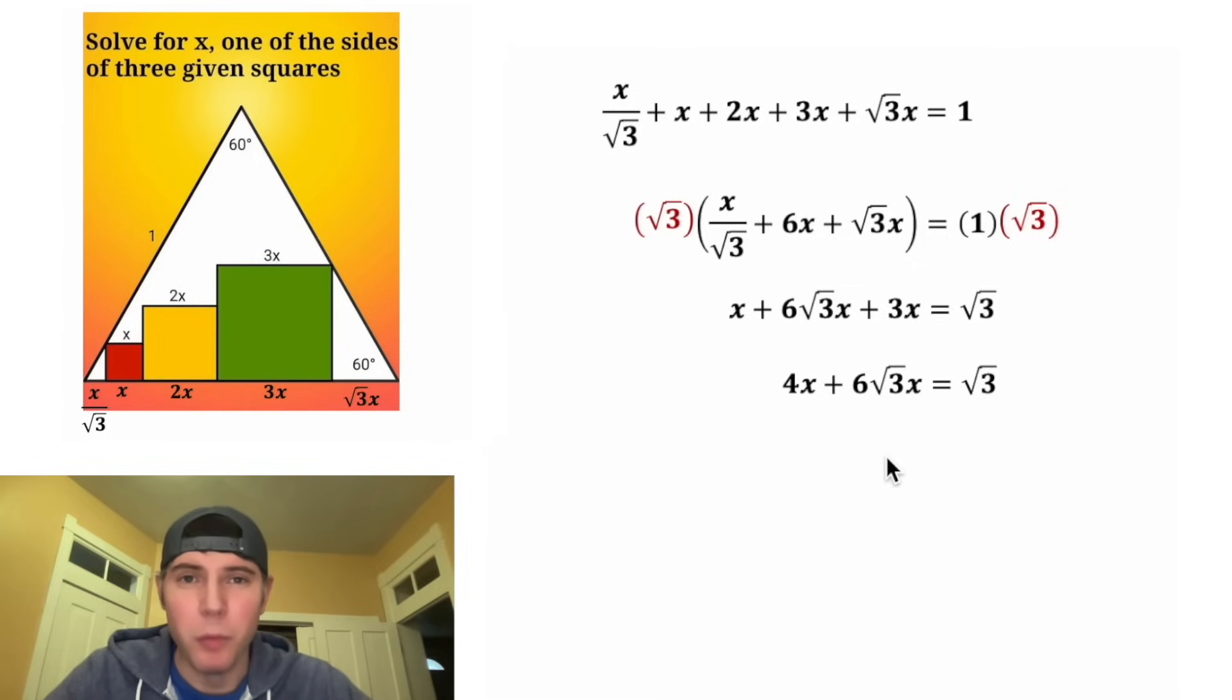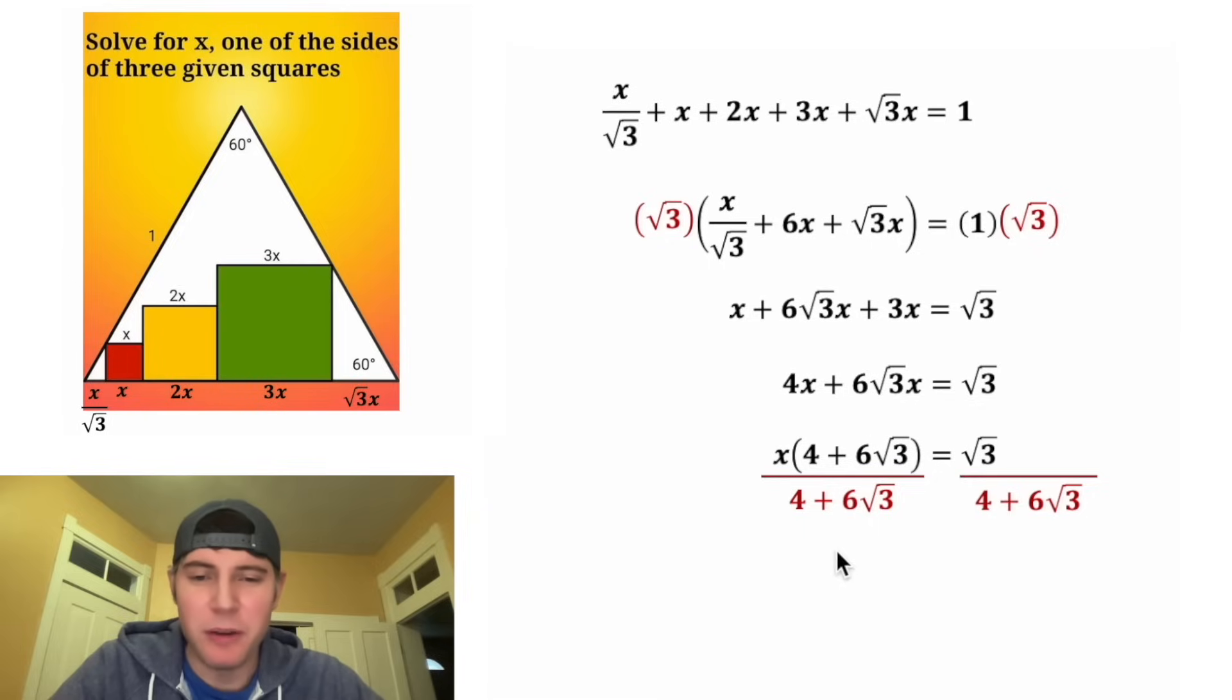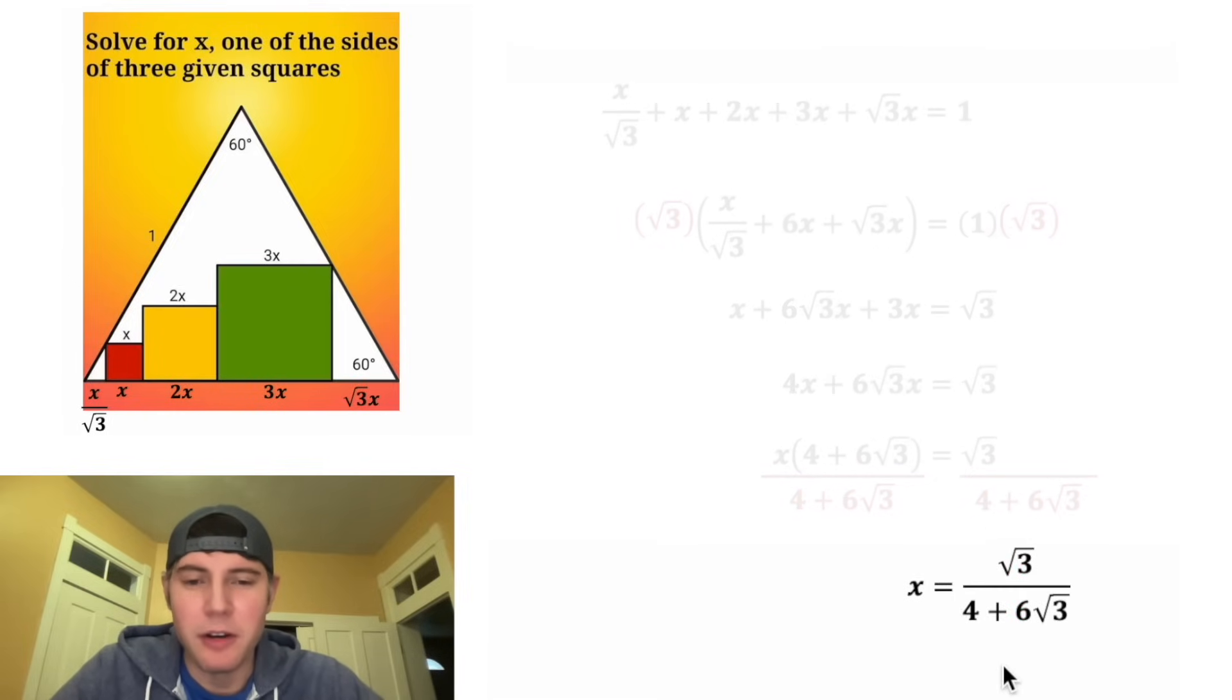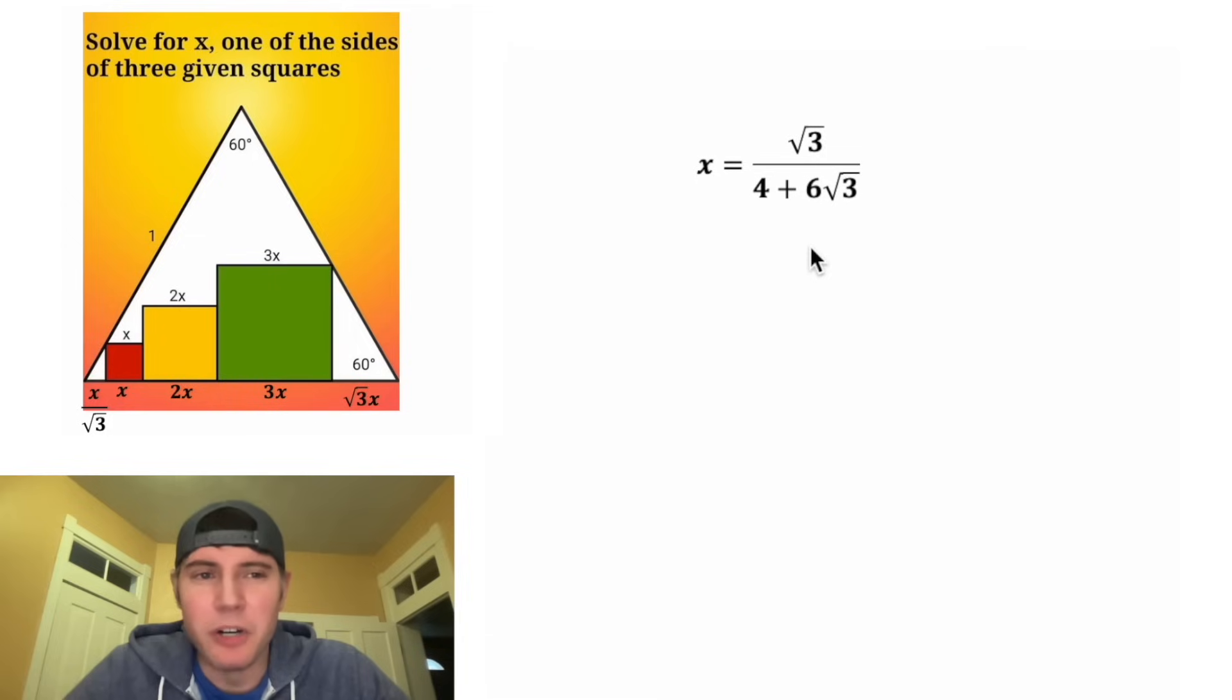We can only do that if we have one X. And the way we do that is by factoring out that common X. After we factor the X out of the first term, it's just 4. And after we factor the X out of the second term, it's going to be 6 root 3. And then we can bring down the right hand side. Now I want to get X by itself. So I'm going to divide both sides by 4 plus 6 rad 3. And then we end up with X is equal to rad 3 over 4 plus 6 rad 3. And we're kind of done.